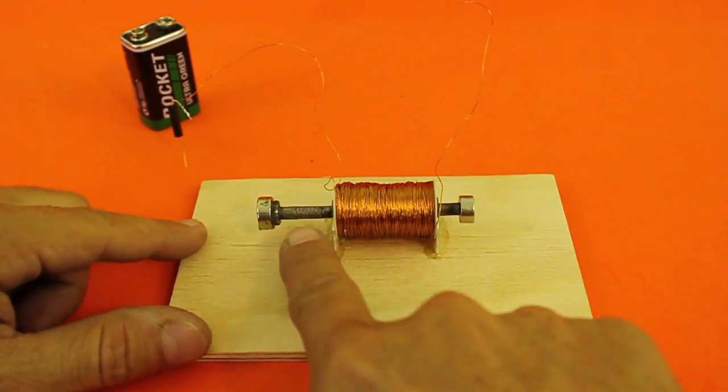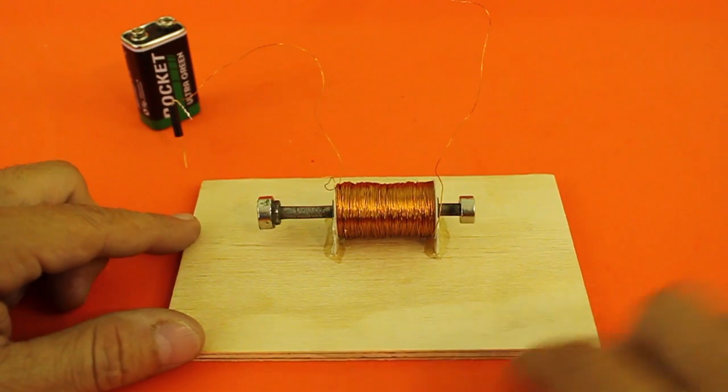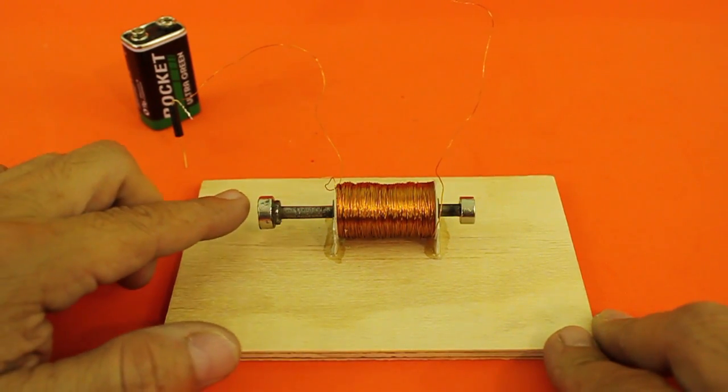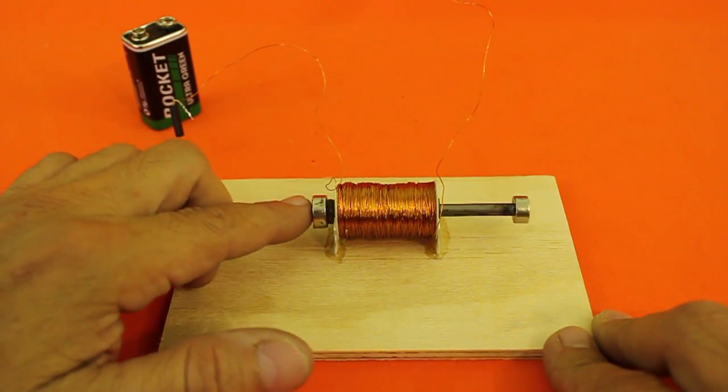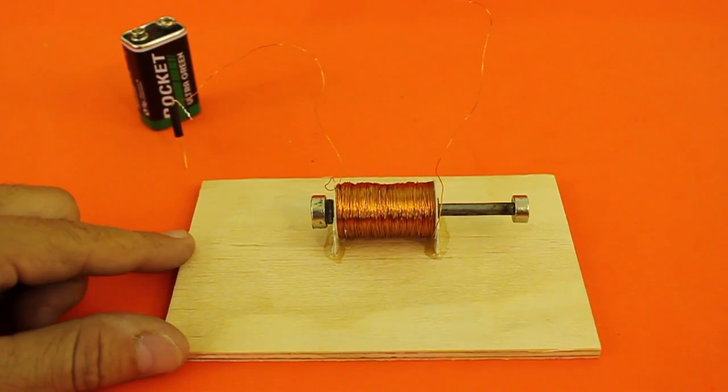So we have attraction here, repulsion here, and the net effect is that we have a force that moves the axis to the right when we apply a current to the solenoid.